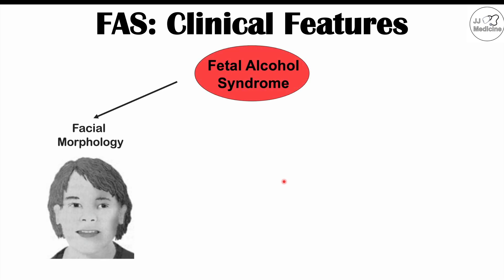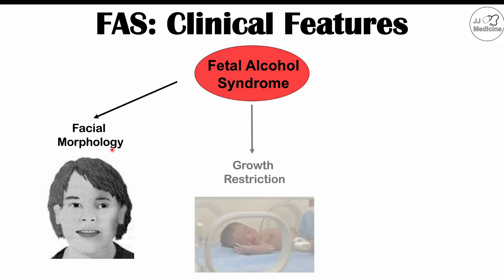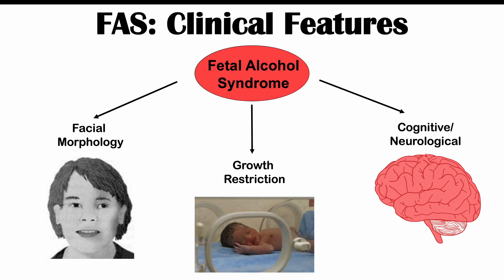The clinical features of fetal alcohol syndrome are broken down into three main categories: facial morphological changes, growth restriction, and cognitive and neurological issues. These all tie in with the pathophysiology — ethanol is a neurotoxin causing toxic effects to neurons in the central nervous system, and the other mechanisms lead to reduced fetal growth.